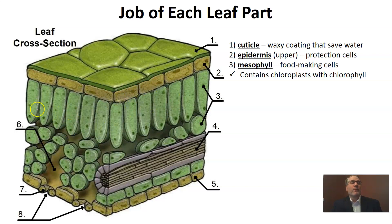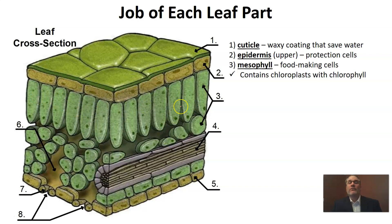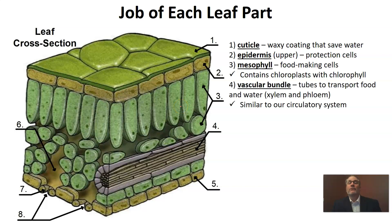Now let's get to the cells that I said were going to be most important — the mesophyll cells. These are the food-making cells. When we say that plants are able to photosynthesize and make food inside their leaves, well this is where that happens. These little green dots you see here are called chloroplasts, and inside the chloroplasts we have the chlorophyll — that's the magic green chemical that allows photosynthesis to happen. Photosynthesis happens here inside these mesophyll cells.